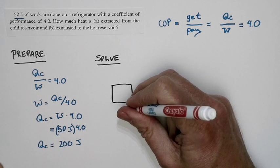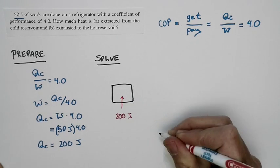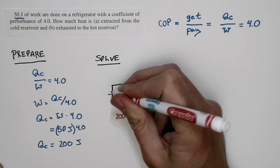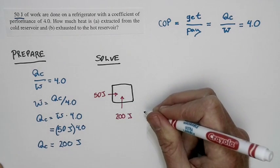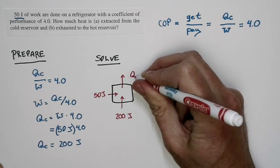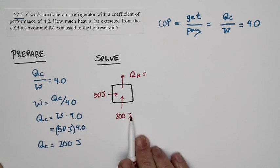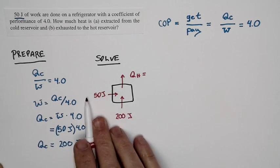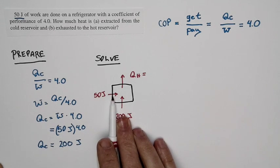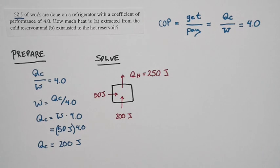Into this system comes 200 joules from the cold reservoir. Also, into this system comes 50 joules of work. The question is, how much energy goes out into the hot reservoir? But just sketching it out this way, we can see there's 200 joules comes in from the cold reservoir, 50 joules comes in as work. And so, clearly, we have to exhaust 250 joules into the hot reservoir. That must be true.